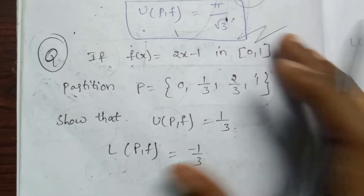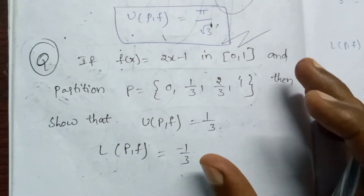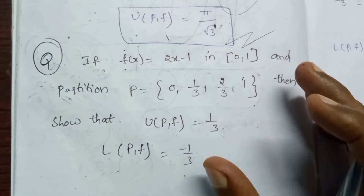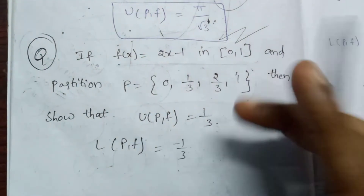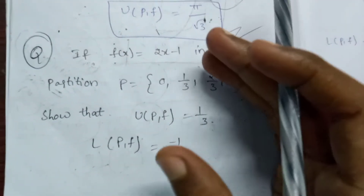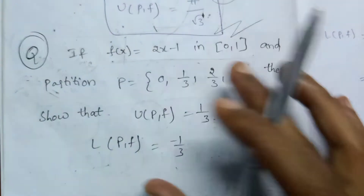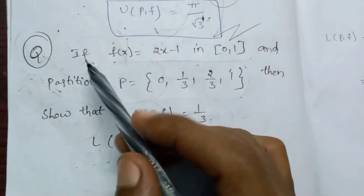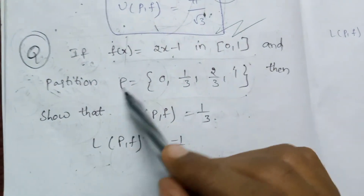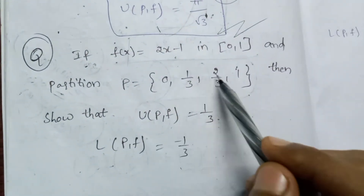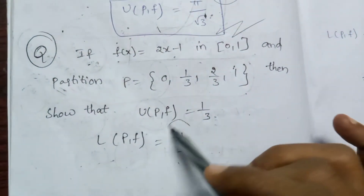Hi guys. I am going to discuss this question about LPF and UPF. If f of x is equal to 2x minus 1 in the closed interval [0,1], with partition {0, 1/3, 2/3, 1}, then show that UPF is equal to 1/3 and LPF is equal to minus 1/3.